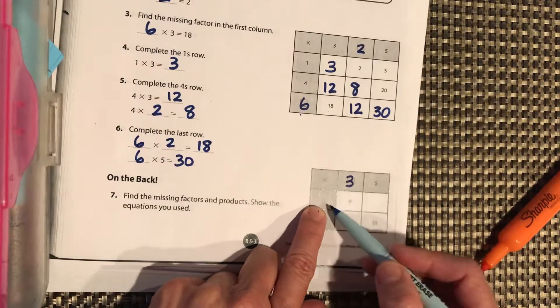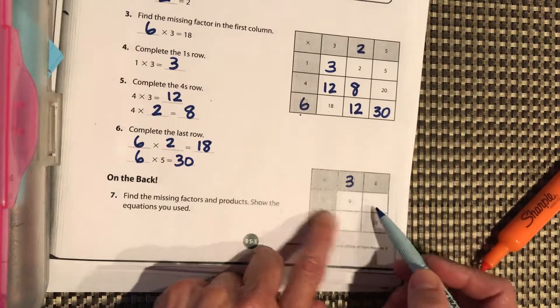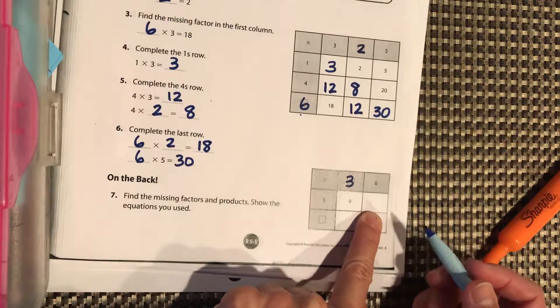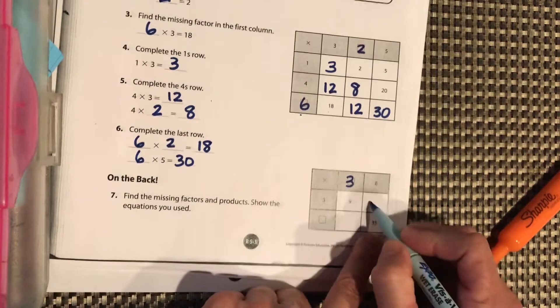And then now that we know, we should be able to do 3 times 5 and put that answer there. Pause it. That should be 15.